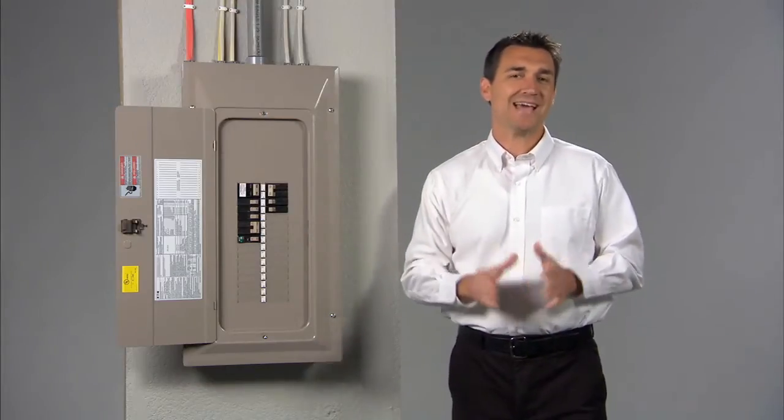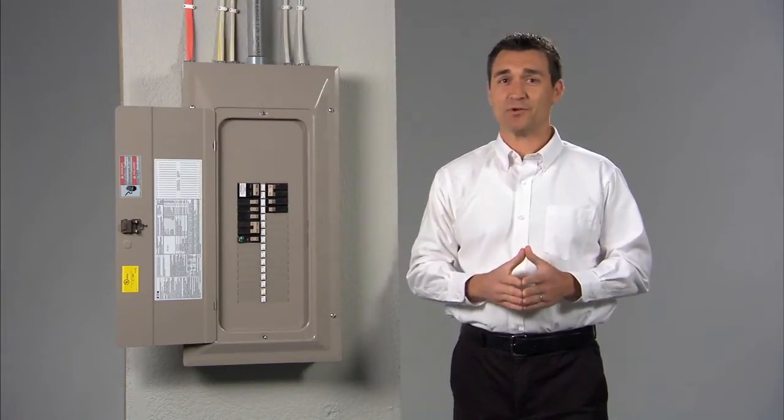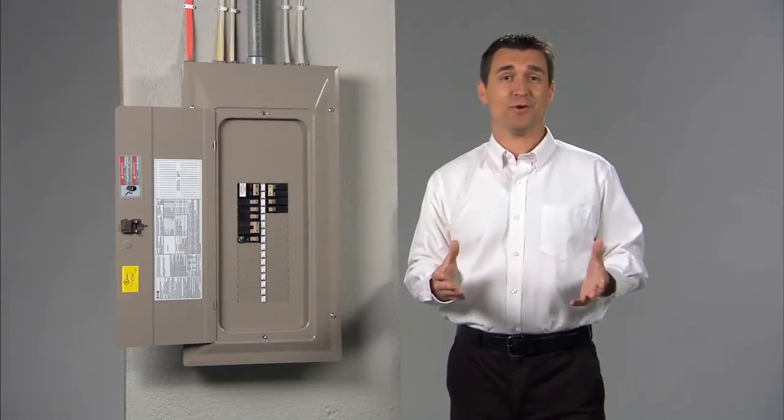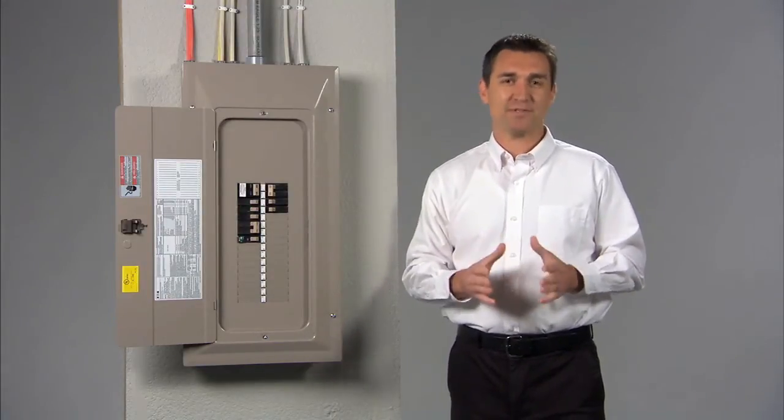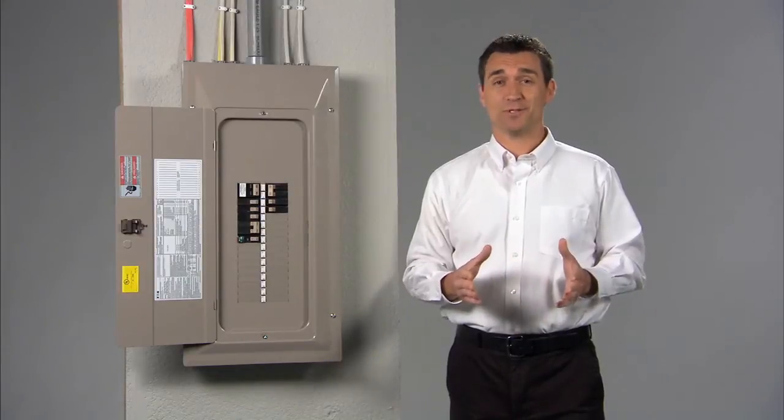When a circuit breaker trips, it's acting as a safety device to protect your electrical panel from an electrical overload. Electrical overloads could cause damage to appliances and ultimately result in a fire.